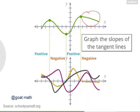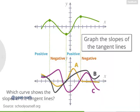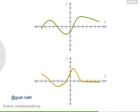And in these two regions, where the function is decreasing, the tangent lines have negative slopes. So we figured out that the graph of the slopes of the tangent lines should be zero at these three x coordinates, the graph should be positive in these two regions, and negative in these two regions. So which of these three curves correctly graphs the slopes of the tangent lines? Absolutely right, it's the yellow curve. Sure enough, this graph is zero at these three x coordinates, positive in these two regions, negative in these two regions. This is a graph of the slopes of the tangent lines for the top graph.